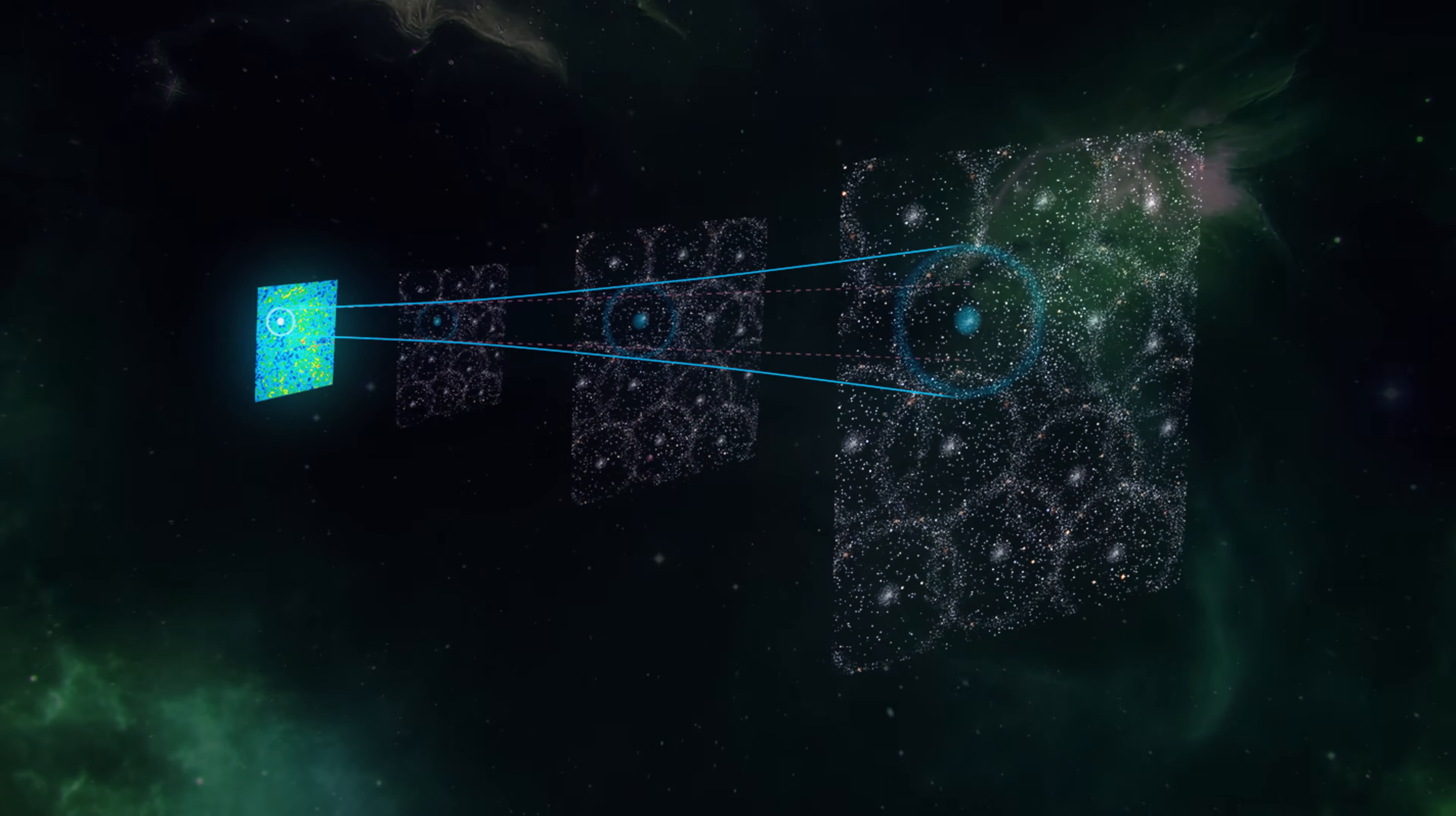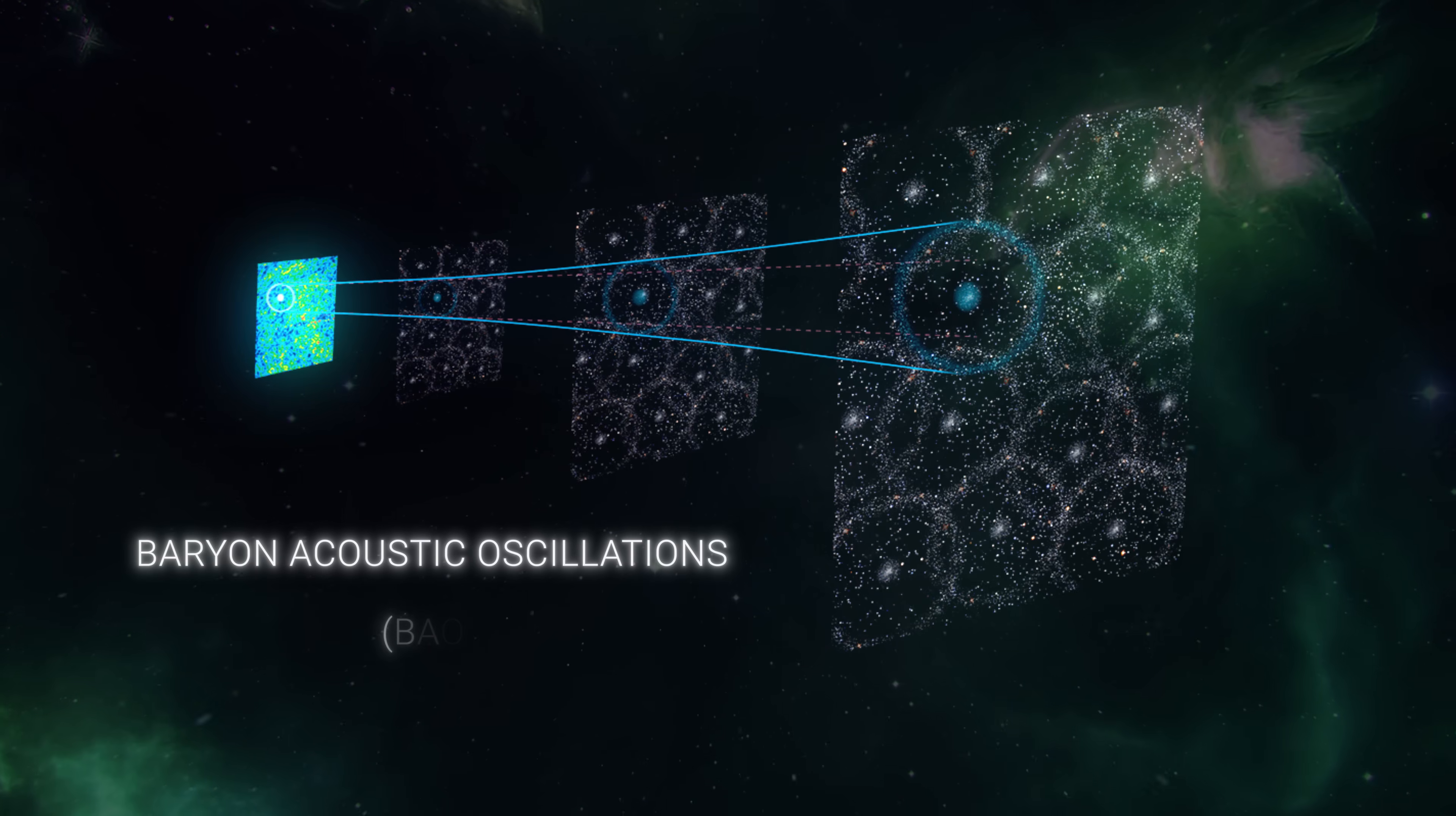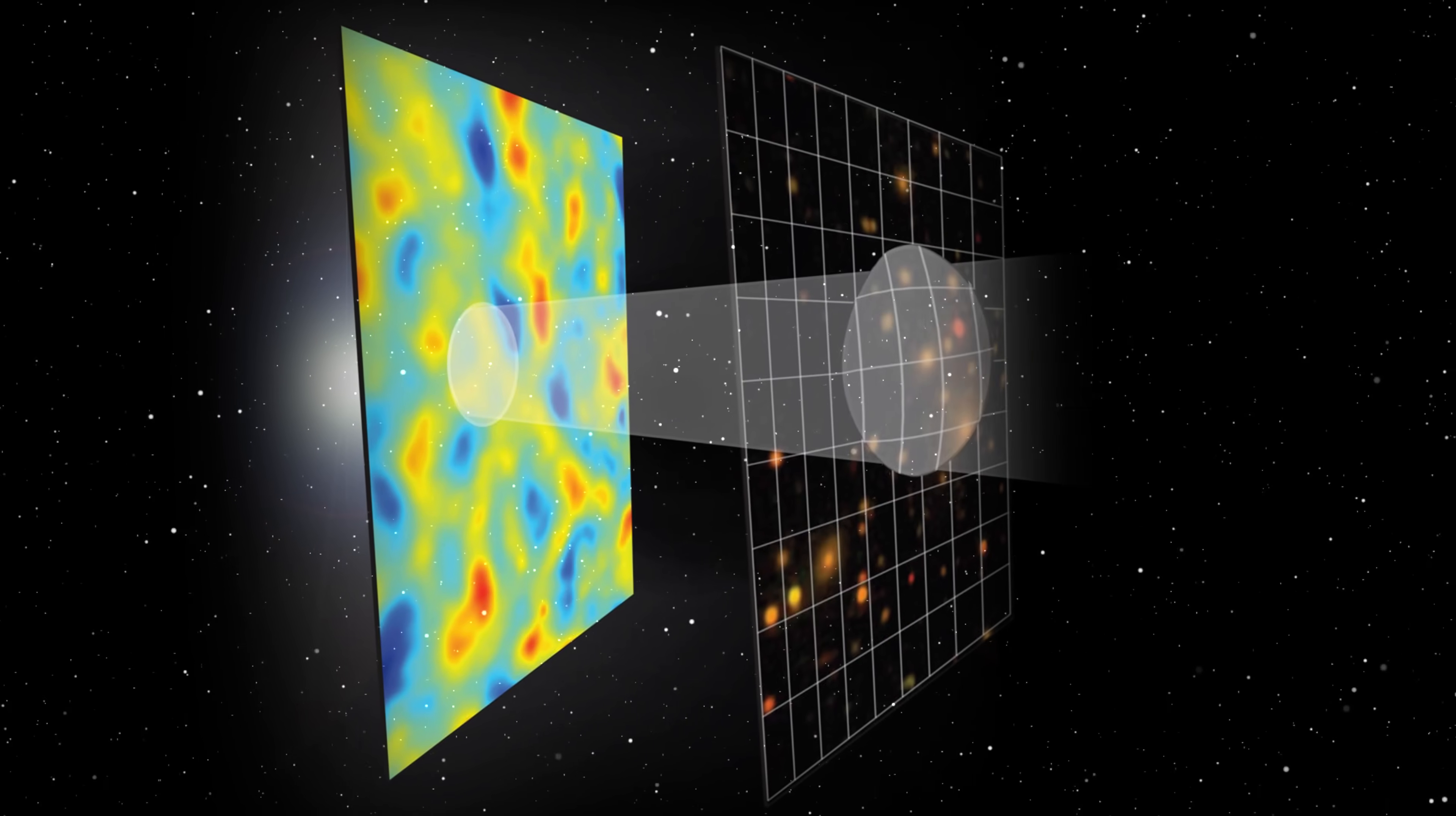Another interesting theory is the theory of Baryon acoustic oscillations, commonly known as BAO. These cosmic echoes are not just remnants of the early universe, but potential clues to unraveling the mysteries of structures such as the giant arc and the Great Ring.